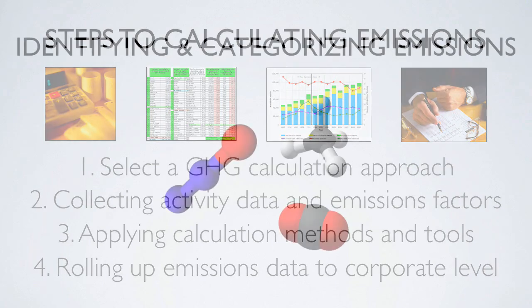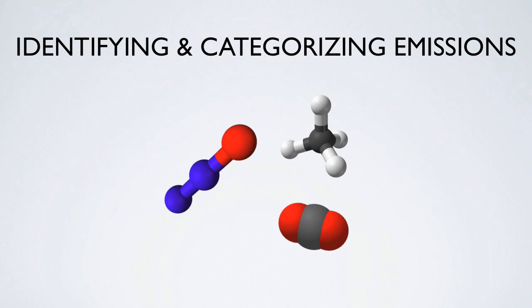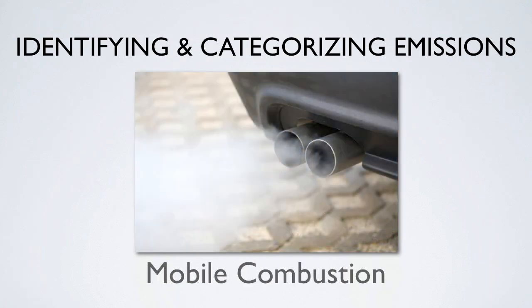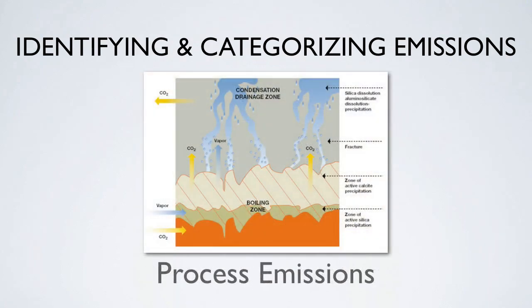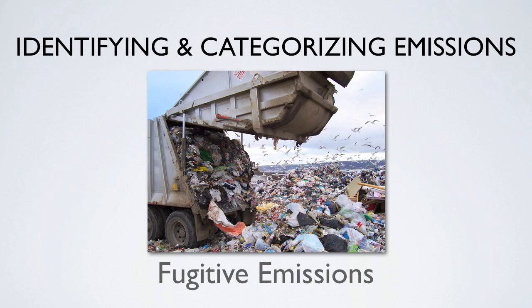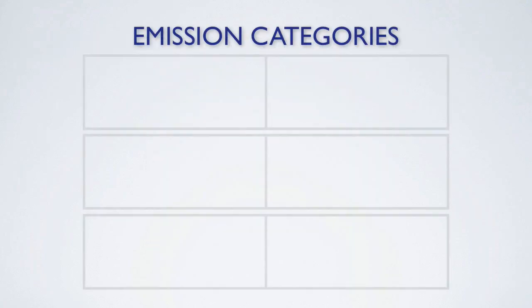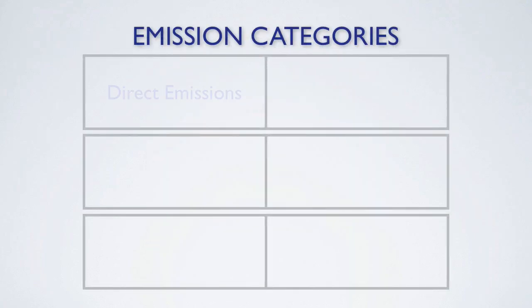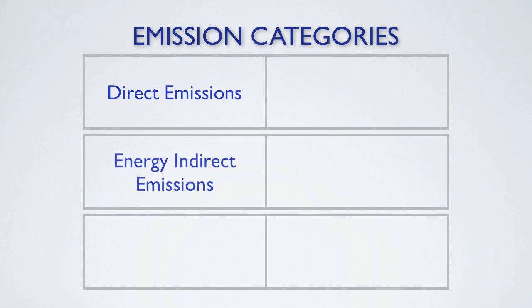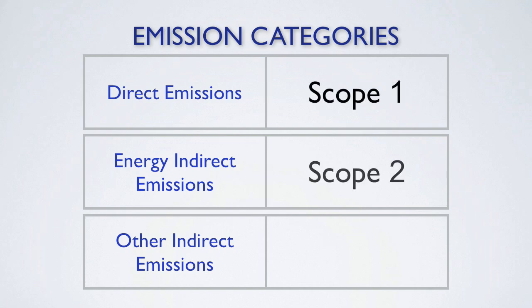We already talked about identifying and categorizing emissions in a previous module, but here is a brief recap. Greenhouse gas emissions typically come from one of the following four source categories: stationary combustion, mobile combustion, process emissions, and fugitive emissions. Once emissions have been identified, they can be further sorted into one of three groups, also known as scopes one, two, and three.